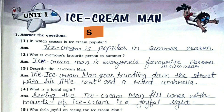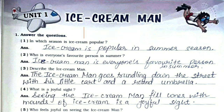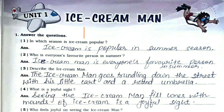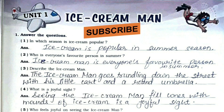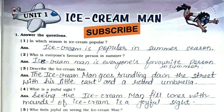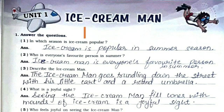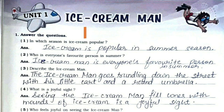Third: describe the Ice Cream Man. The Ice Cream Man goes trundling down the street with his little cart and a round umbrella. Fourth: what is a joyful sight? Seeing the Ice Cream Man fill cones with mounds of ice cream is a joyful sight.